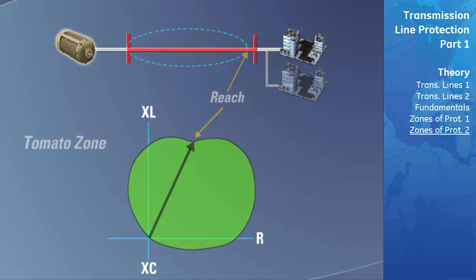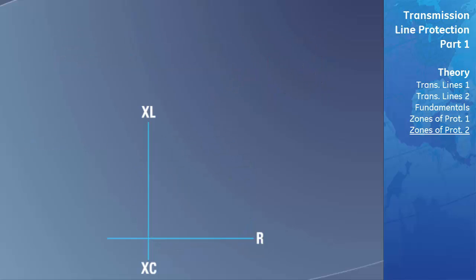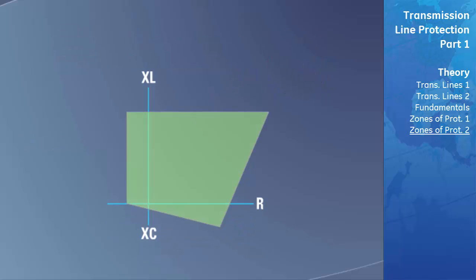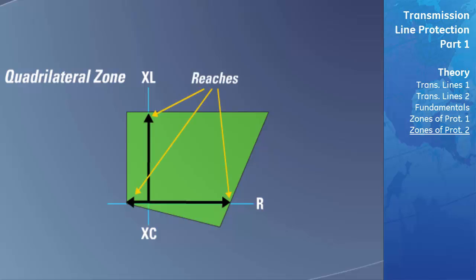Another custom zone is known as a quadrilateral zone of protection. This type of zone allows you to set the reactance and resistive upper and lower boundaries to create your own custom shape to match the needs of your power system. In this type of zone, there are essentially two reaches: one in the inductive direction and one in the resistive direction.